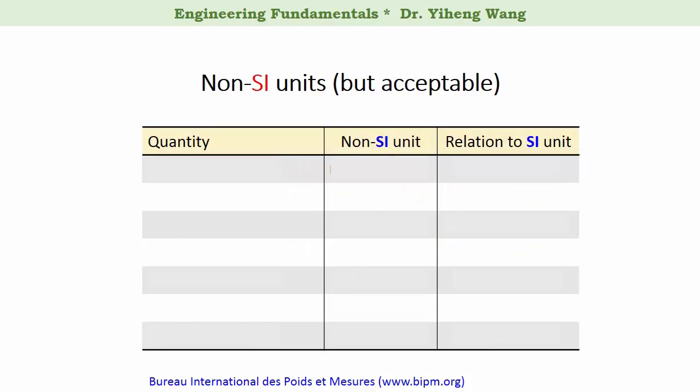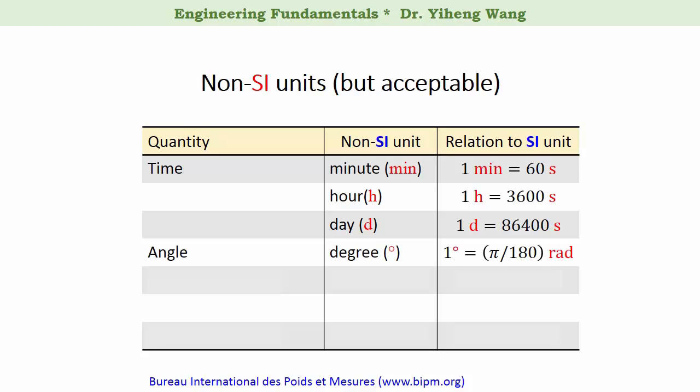In this table, I'm going to list some common non-SI units. For example, for time, minute, hour, and day are all units we are very familiar with. For angle, degree is also a common unit. For volume, we have liter, and its derived unit milliliter is also very common. And for mass, we have ton, which is 1000 kg, etc.